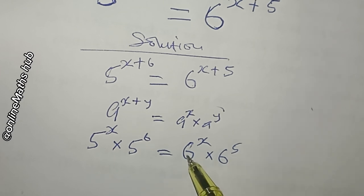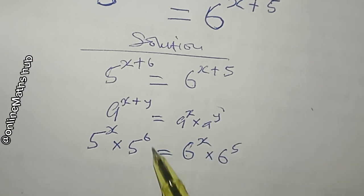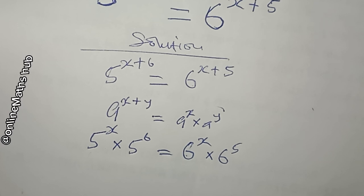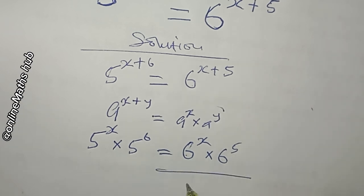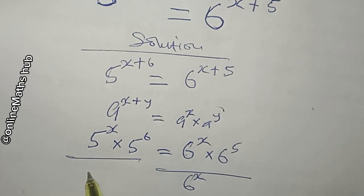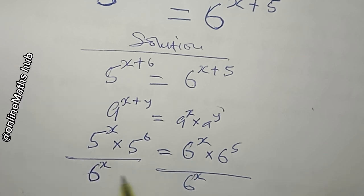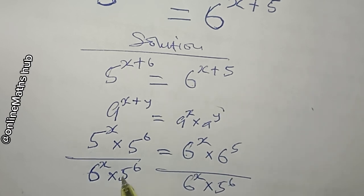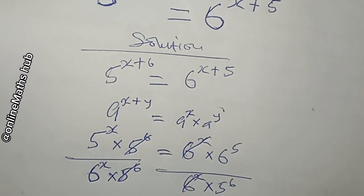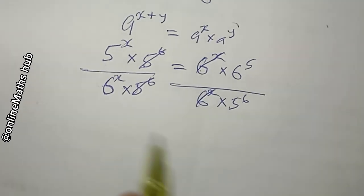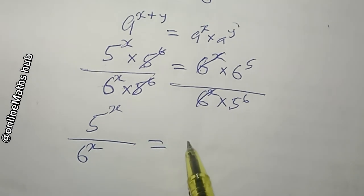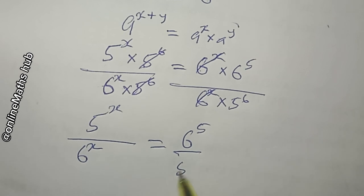The next thing I want to do is divide through by 6 power x and also eliminate 5 power 6 from the left hand side, so that the terms containing x are on one side and the terms without x are on the other side. After dividing through by 6 power x and 5 power 6, we get: 5 power x divided by 6 power x is equal to 6 power 5 divided by 5 power 6.